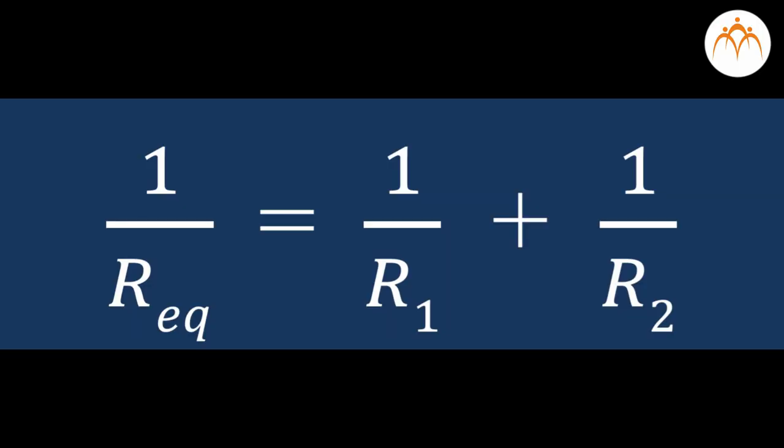The equivalent resistance of a circuit is the amount of resistance that a single resistor would need in order to equal the overall effect of the collection of resistors present in the circuit. For parallel circuits, the mathematical formula for computing the equivalent resistance Req is: 1 divided by Req equals 1 over R1 plus 1 over R2, where R1 and R2 are the resistance values of the individual resistors connected in parallel.